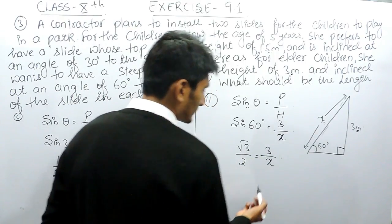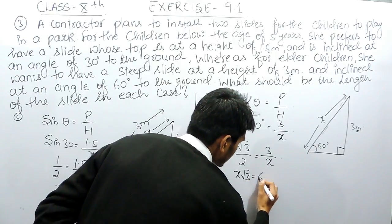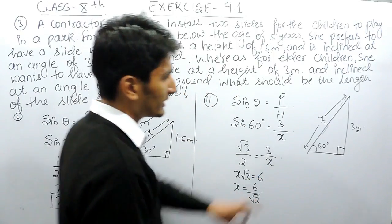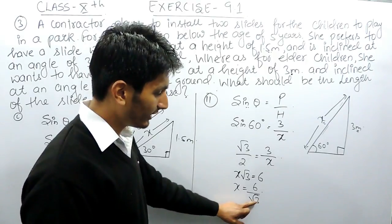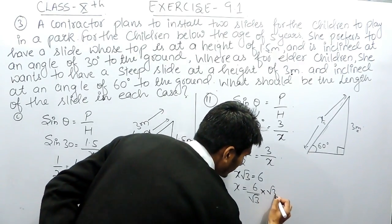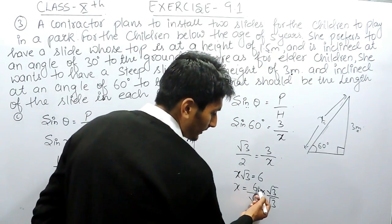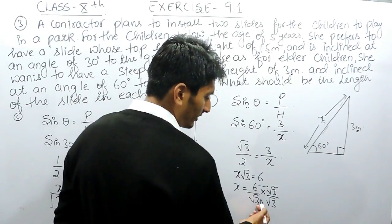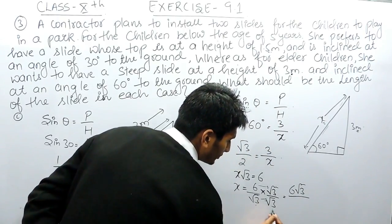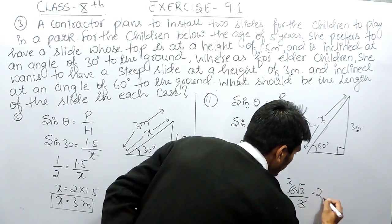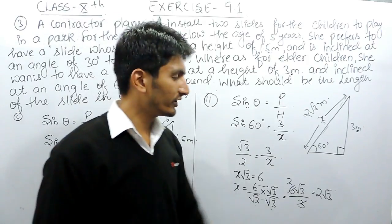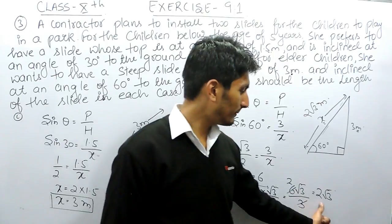Cross-multiplying gives x root 3 equals 6, so x equals 6 upon root 3. Since there is a root in the denominator, we rationalize by multiplying both numerator and denominator by root 3. The numerator becomes 6 root 3 and the denominator becomes root 3 times root 3 equals 3, giving x equals 2 root 3. So the length of the slide in the second case is 2 root 3 meters. If you substitute root 3 as 1.73 and multiply by 2, you get the answer in decimals.